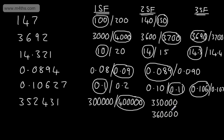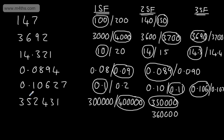Looking at 360,000 versus 350,000 — we can see it's going to round down, so it would be 350,000 correct to two significant figures. If we look at the third significant figure, that is in the thousands column, so we're going to round to the nearest 1,000.